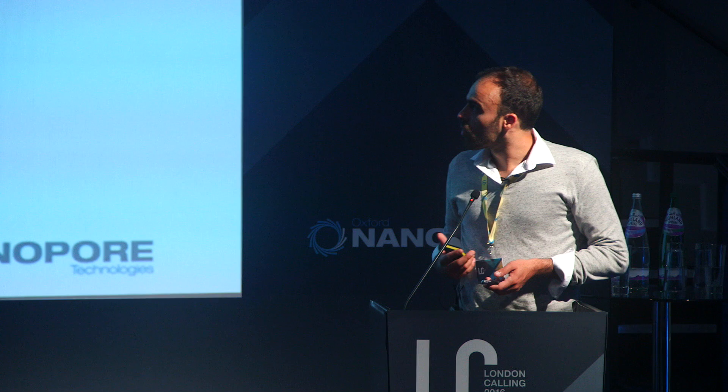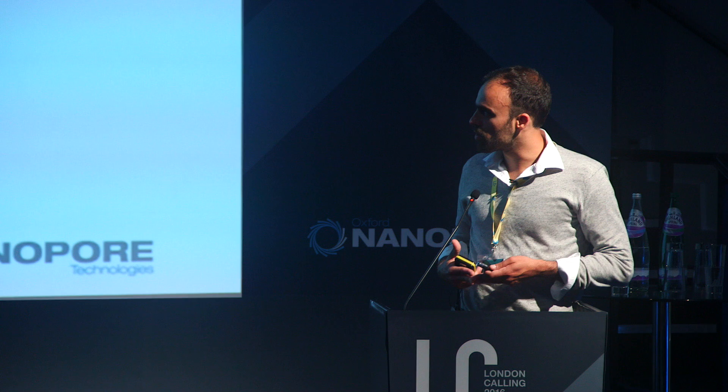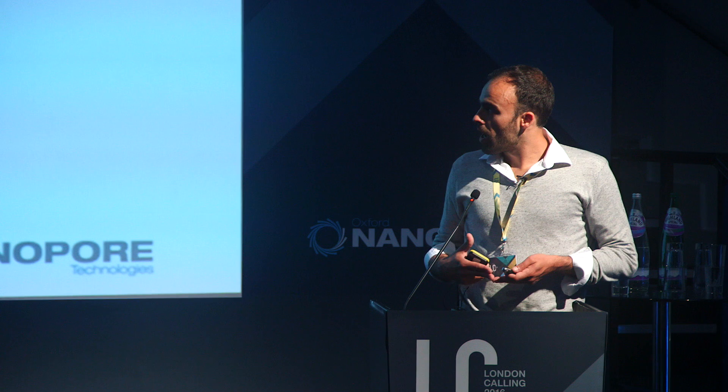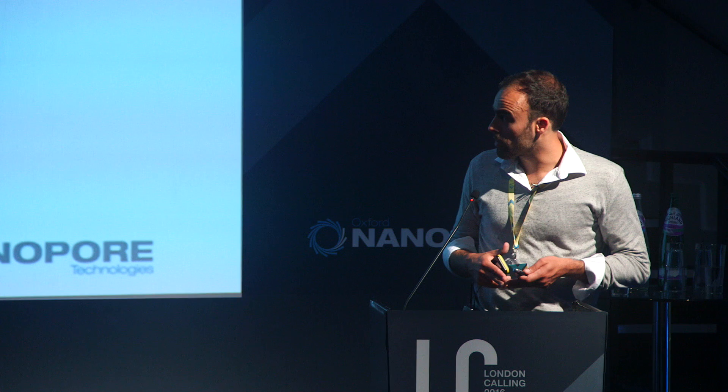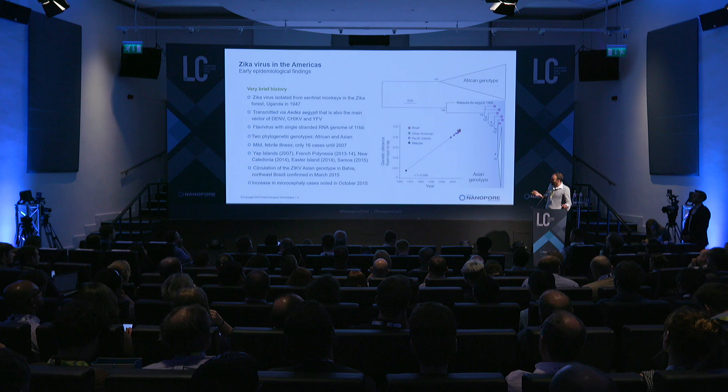Just a short overview on the Zika virus: it was first isolated in 1947 in sentinel monkeys in Uganda in the Zika forest. It's transmitted by the Aedes aegypti mosquito, and also other mosquitoes, which is the same vector as dengue, chikungunya, and yellow fever. It's a flavivirus with a single-stranded RNA genome of around 10,000 base pairs. There are two phylogenetic genotypes: the African genotype, which caused only around 16 naturally occurring cases up until 2007, and the Asian genotype.